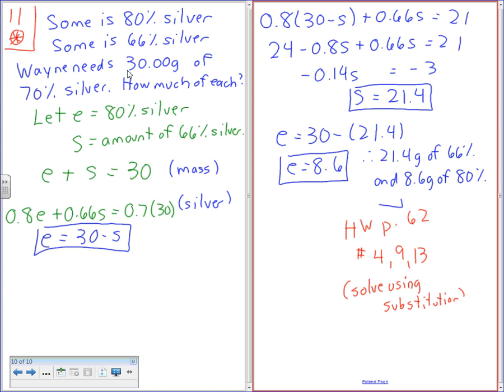Now the way you can sort of visually check to make sure that's right, one you can substitute it to make sure it works, but secondly, if you're looking for 70% silver, and your two options are 66 and 80, there should be a lot more of 66 than 80, because 66 is closer to 70, right? So because that makes sense, your answer should be 21.4 grams of 66% and less than that of 80%.